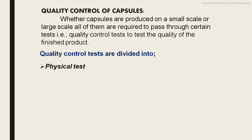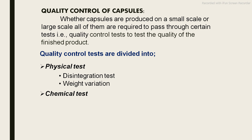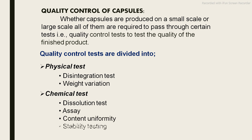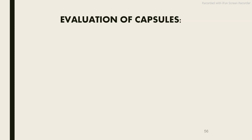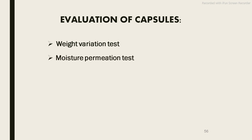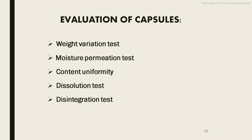Quality control tests are divided into two groups. First is the physical test, which includes the disintegration test and weight variation test. Next is the chemical test, which includes dissolution test, assay, content uniformity, stability testing, and moisture permeation test. Before dispatching the product to the market, the capsule must qualify these different quality control tests. The tests are: weight variation, moisture permeation, content uniformity, dissolution, and disintegration.